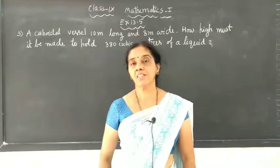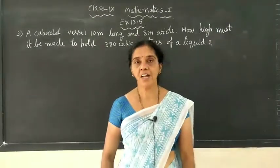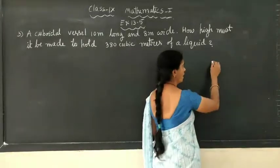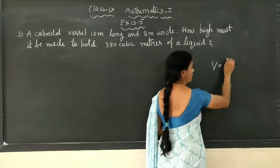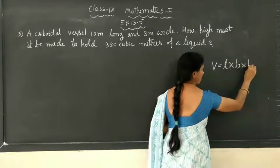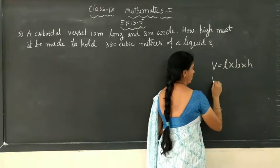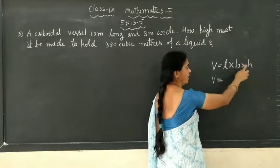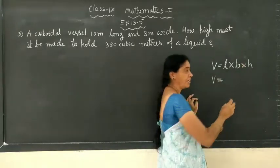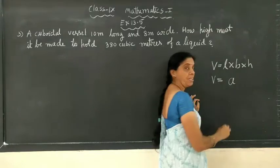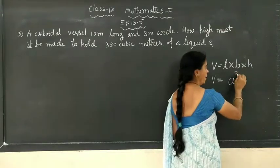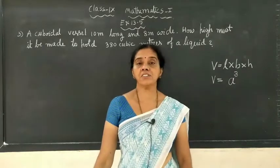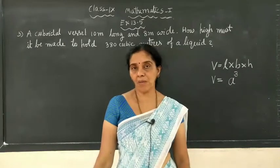In the last class we studied the volume of cuboid and volume of cube. Volume of cuboid is given by the formula V = L × B × H, and volume of the cube is given as A³, since L, B, H are the same and if we consider one side of the cube as A. These are the two formulas we learned.